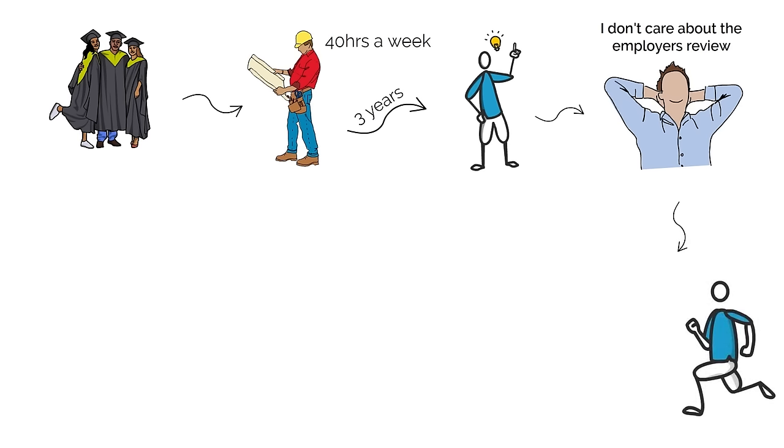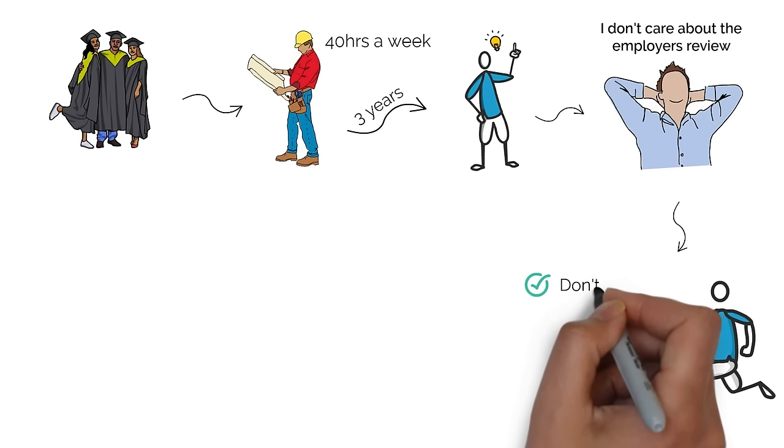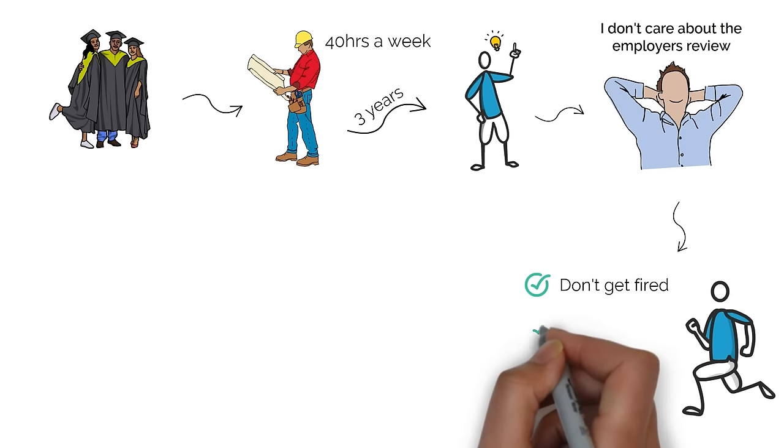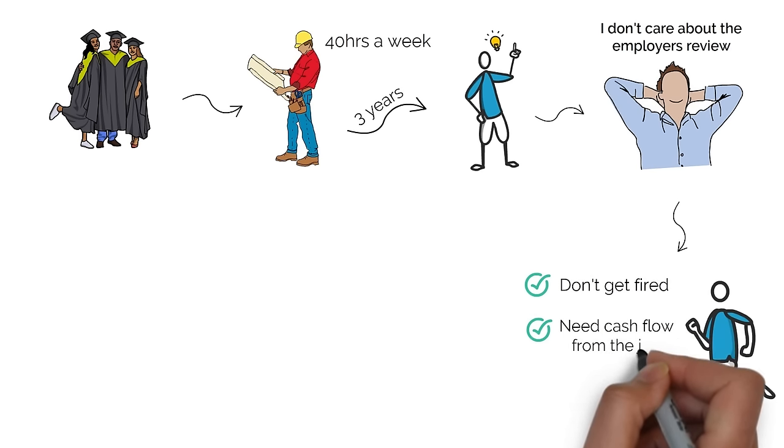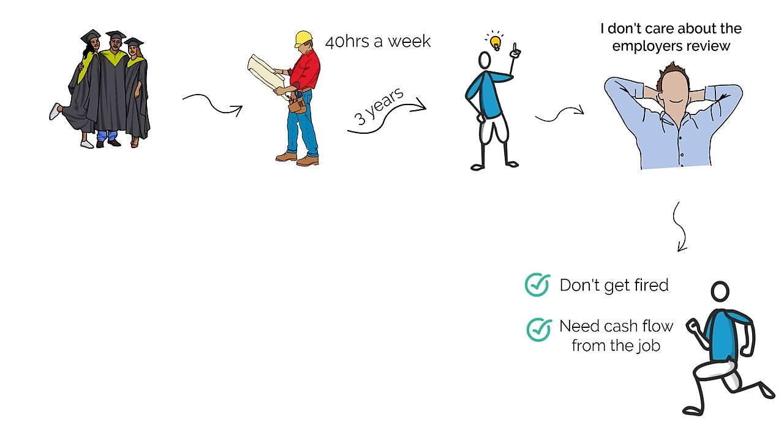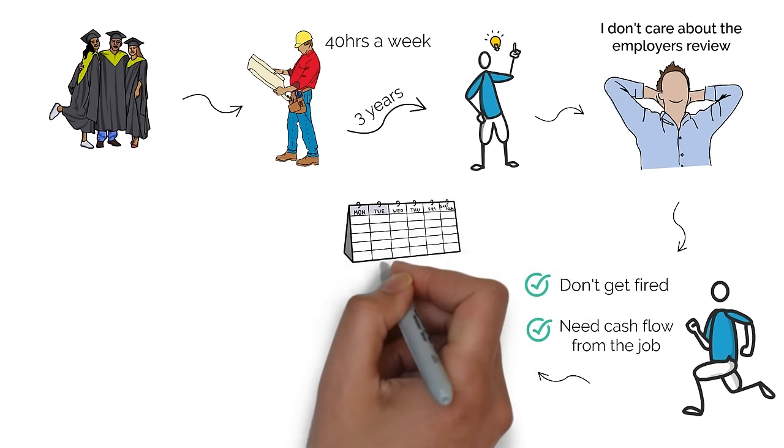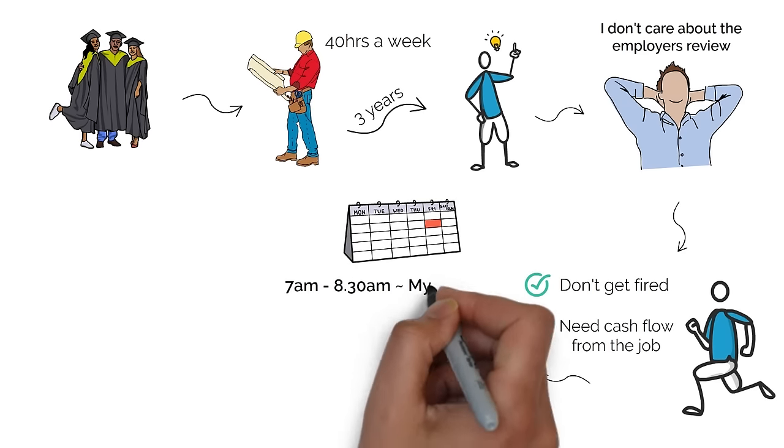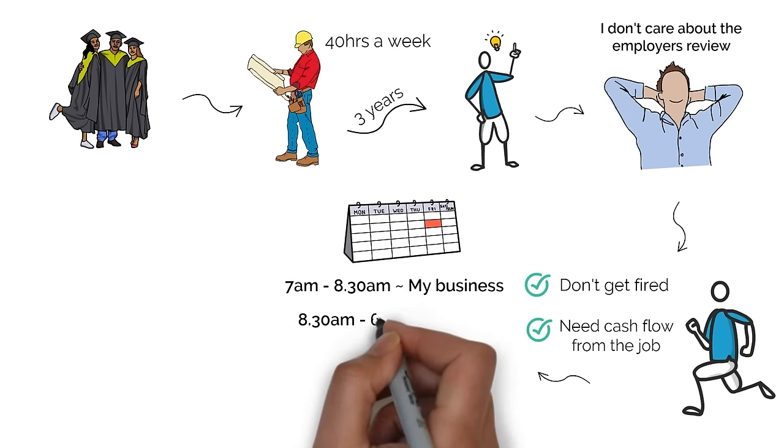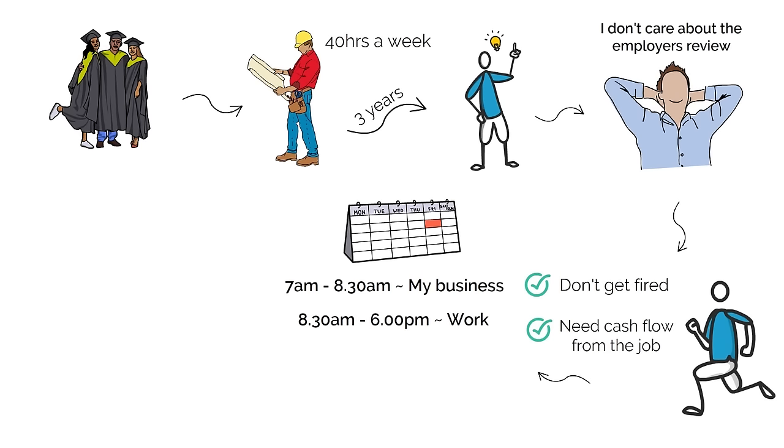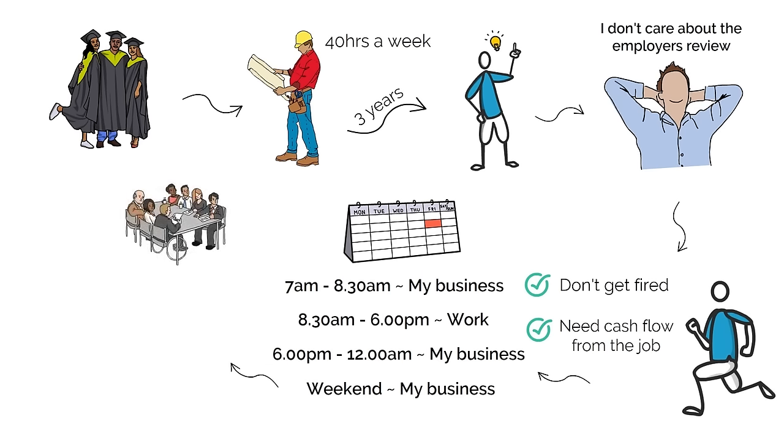They should not tell me you have lost your job because I need the cash flow. So I just did enough to make sure that I'm not fired. What I used to do is from 7 in the morning to about 8:30 in the morning before I went to work, I used to work on my business. And then about 6 o'clock or so, I would come home till about midnight, I would work on the business. And then all weekend I would work on the business.